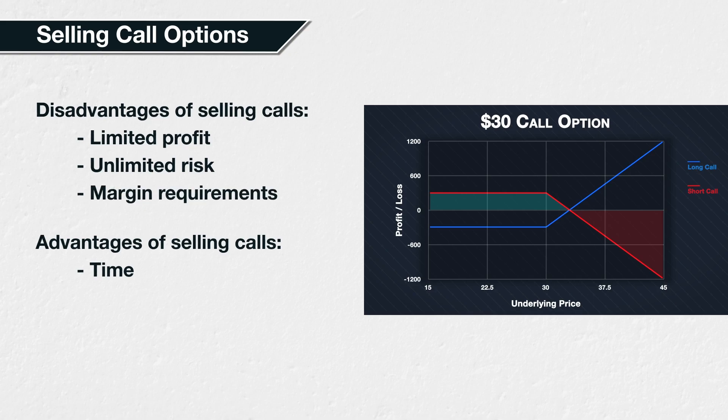Margin is an amount the broker has deemed appropriate for the trader to keep in their account to support their current positions. As the losses of selling a call could exceed this amount if the price increases significantly enough, this could leave the seller in a position where they need to add more funds to their trading account, or face having the position forcibly closed by their broker at a loss. Once you're experienced with options, the margin system will be second nature to you. However, this added complexity and risk means it is advisable to stick to buying options and at least avoid selling naked options when you're first starting out.